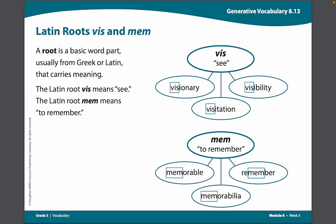Next is the word memorabilia. Let's break this word into its syllables: Mem-or-a-be-li-a. This word is six syllables long. You can tell that this word will have many syllables because there are many vowels in between the consonants of this word. The word memorabilia means objects that help you to remember.